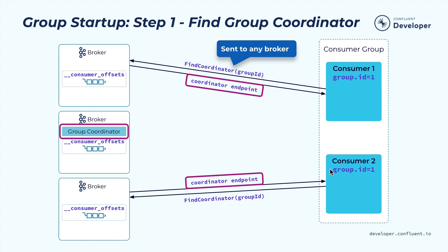Now let's look at how a consumer group is started. In this case, we have a consumer group with two members starting at the same time in parallel. The first thing each consumer instance needs to do is to identify the group coordinator for this group. On the broker side, we use an internal topic called consumer offset to store all the metadata about this particular group. It typically has multiple partitions, and the group coordinator for this consumer group is determined by the leader of the partition this consumer group will be hashed into.